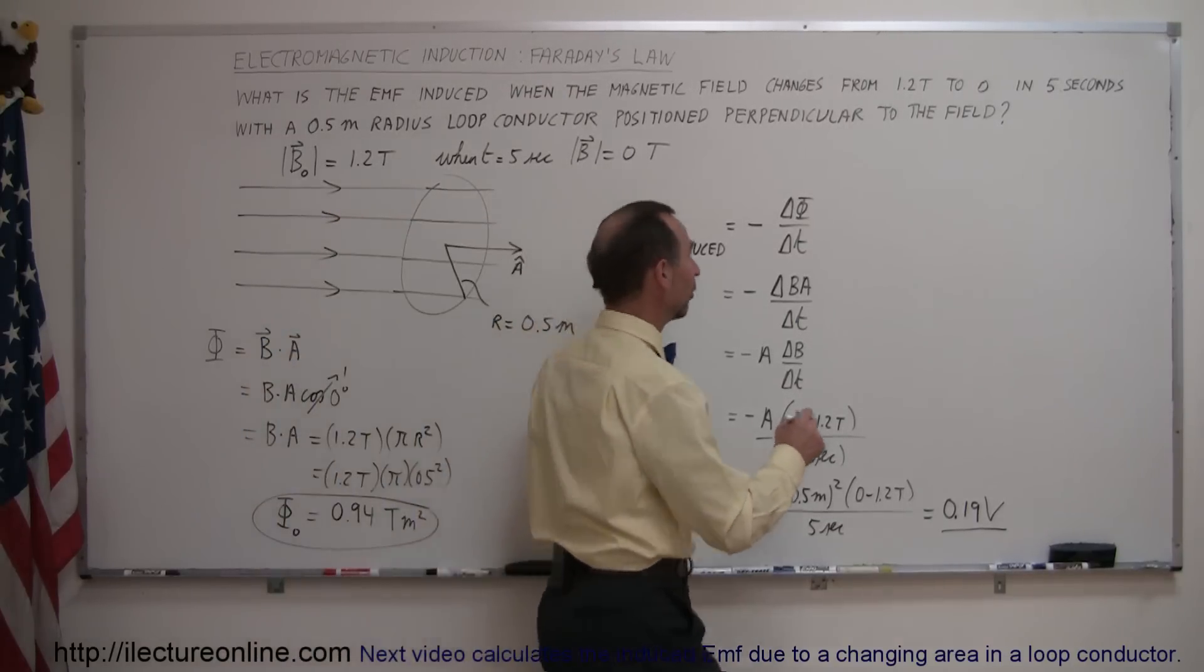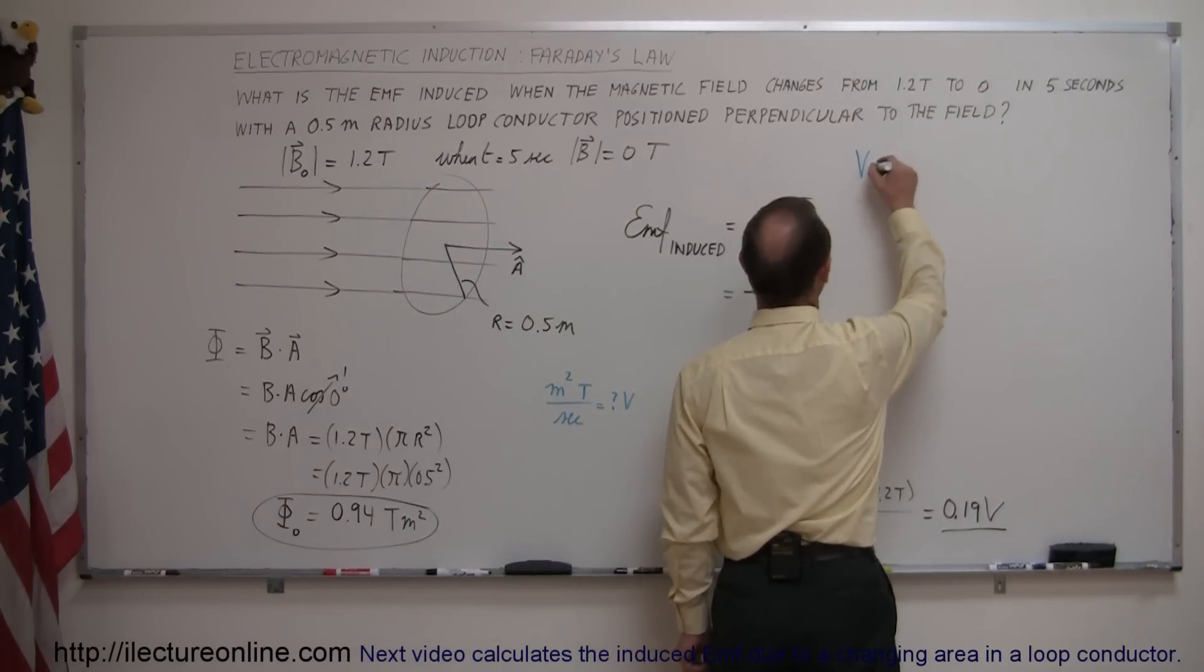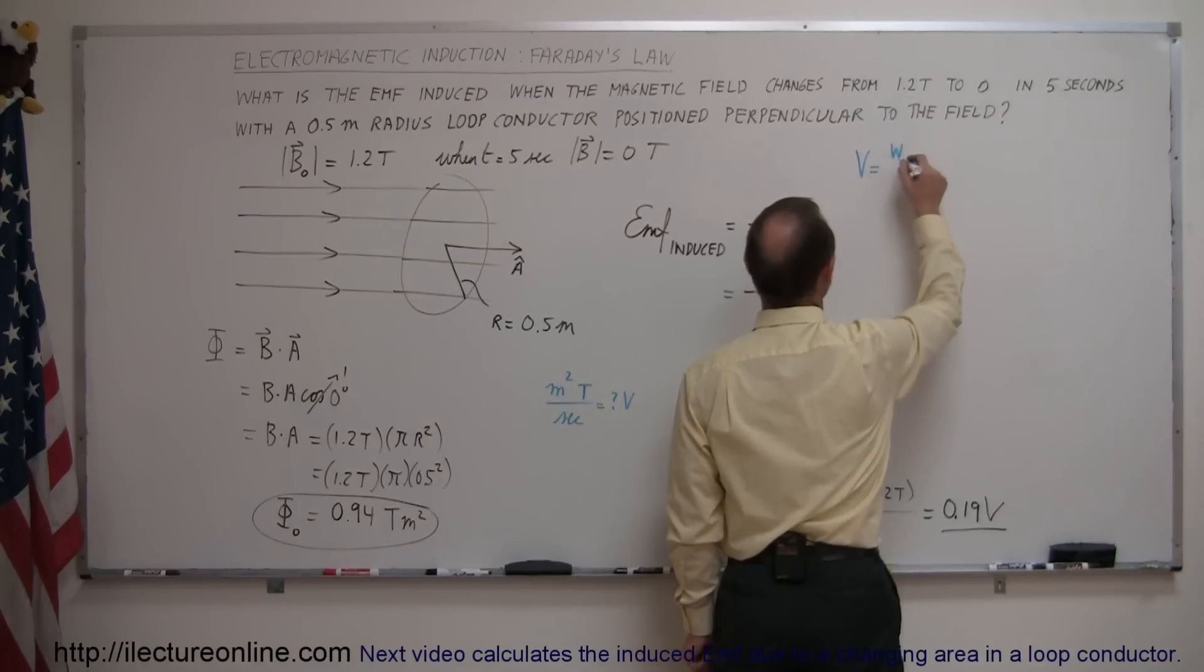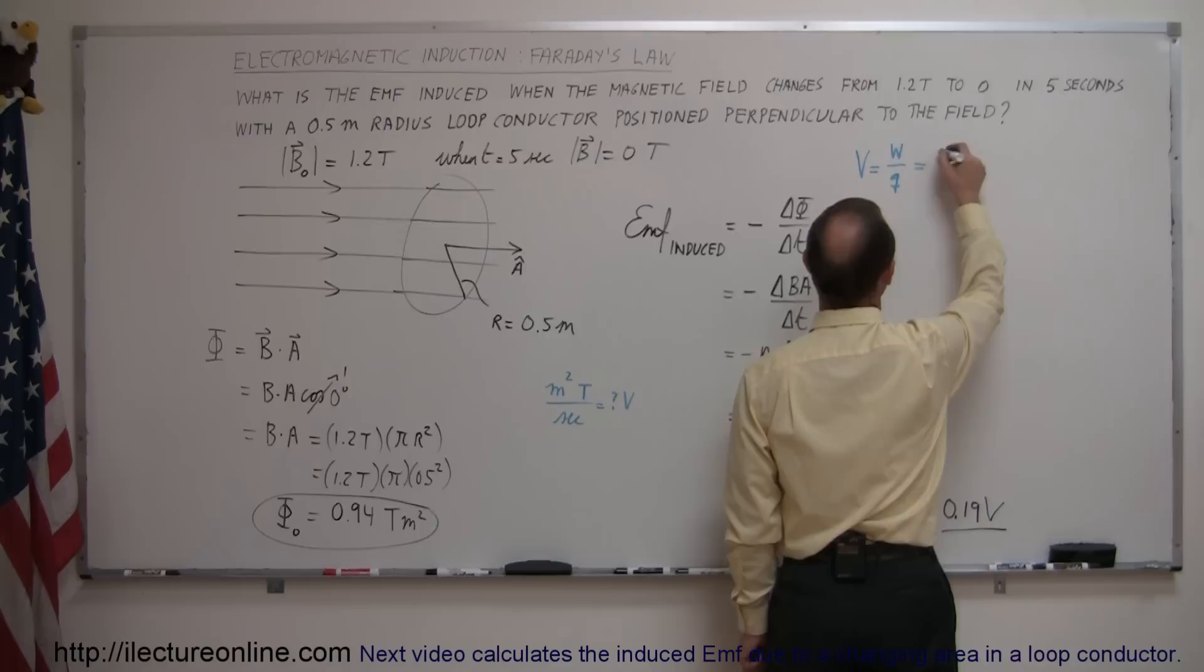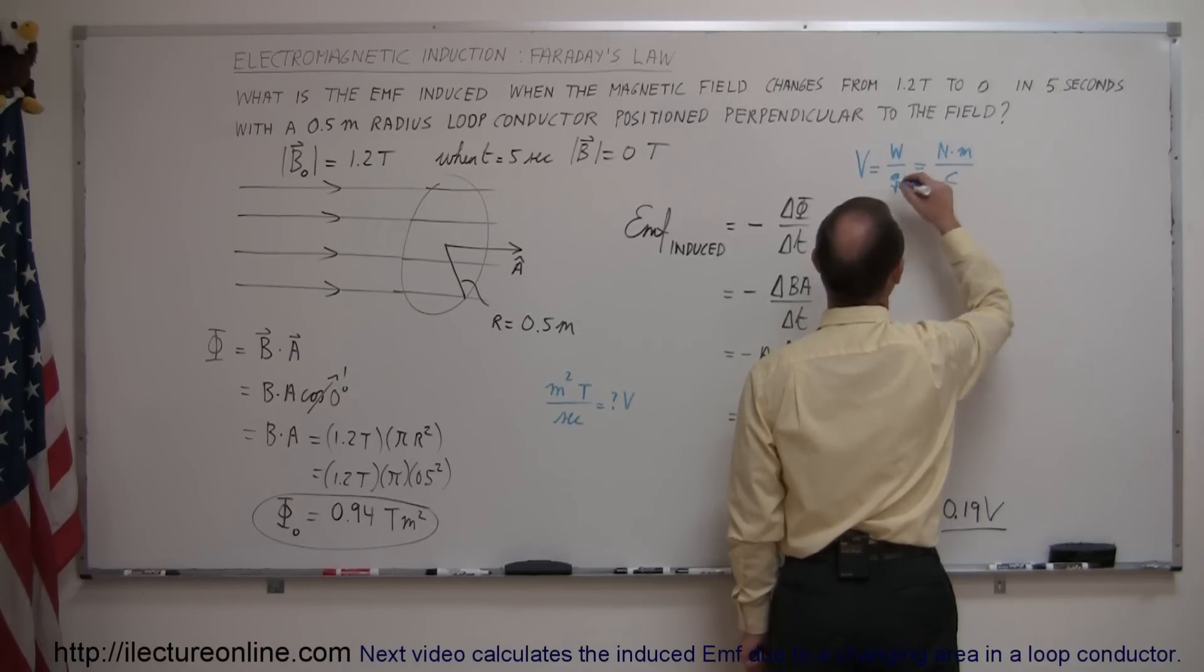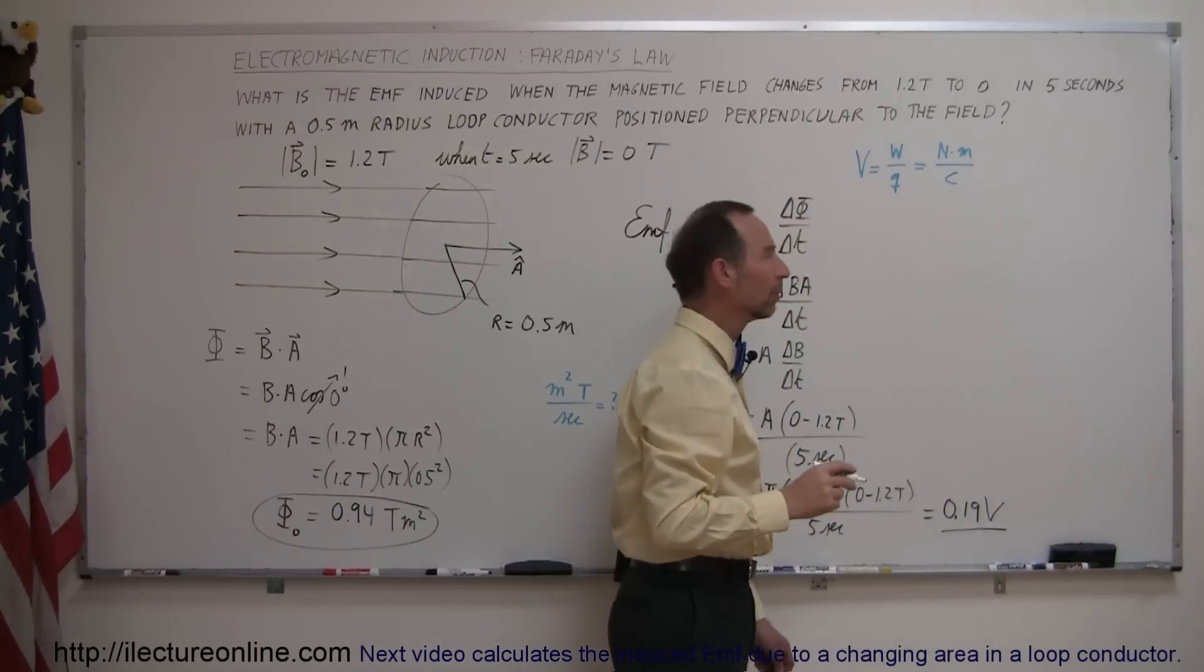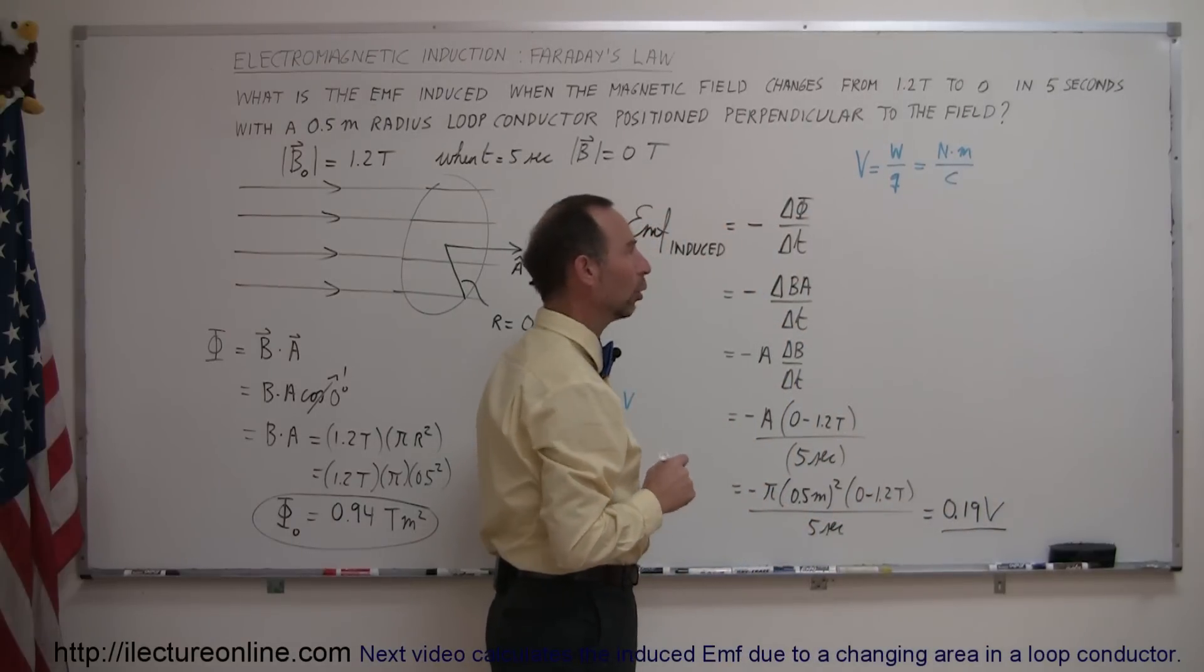Well, first of all, let's define volts. Volts is defined as the work it takes to push a charge across a potential difference, divided by the size of the charge, and so since work is equal to Newton times meters, and charges in coulombs, a volt can be defined as a Newton meter divided by coulomb.